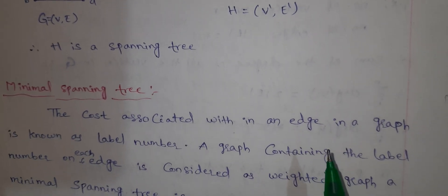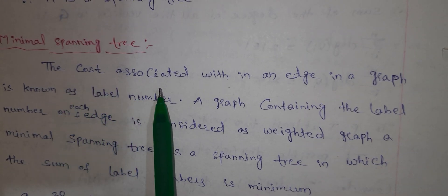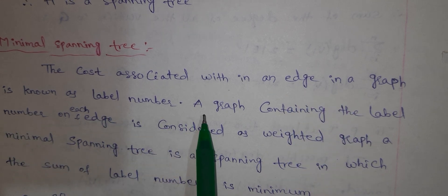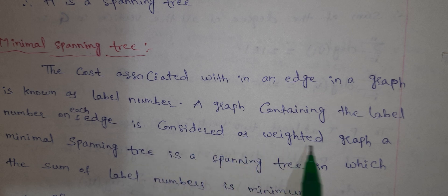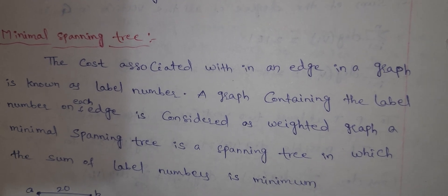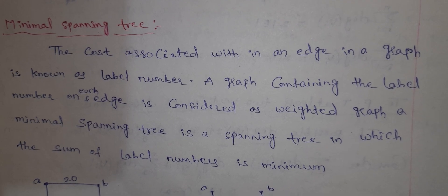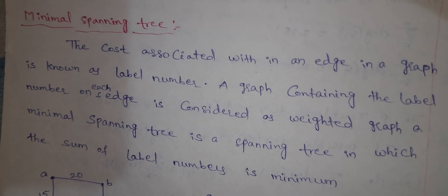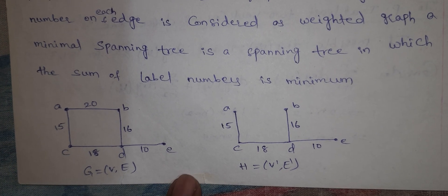Next is Minimal Spanning Tree. The cost associated with an edge in a graph is known as a label number. A graph containing a label number on each edge is considered a weighted graph. A Minimal Spanning Tree is a spanning tree in which the sum of label numbers is minimum. Here is the example to make this clear.